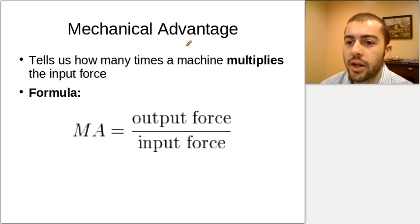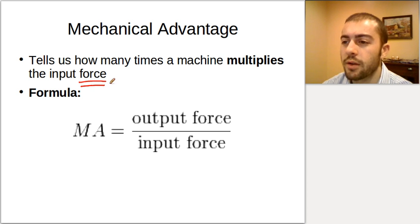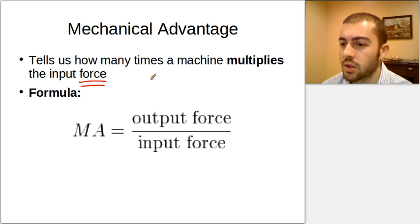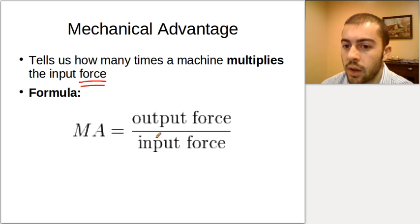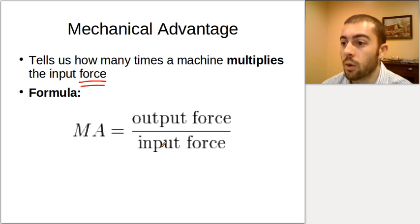Mechanical advantage tells us how many times a machine multiplies the input force. With mechanical advantage, we're talking about force — we're comparing the force that we put in and the force that we put out when we're using a machine. The formula for mechanical advantage is: mechanical advantage equals output force divided by input force.